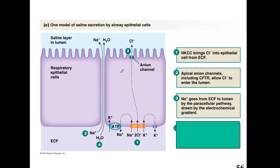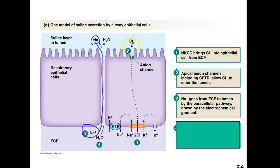Step three: sodium goes from the extracellular fluid — where sodium is always in high concentration — into the lumen. But this time it's paracellular transport, so it travels between the cells, not within them. Now I have chlorine there and sodium there, and that sodium is moving because of an electrochemical gradient — there's more sodium in the extracellular fluid than in the lumen, so it travels toward the lower concentration.